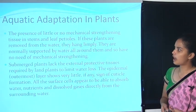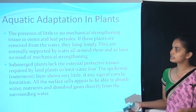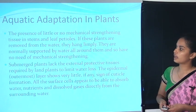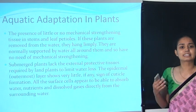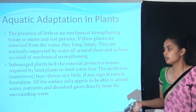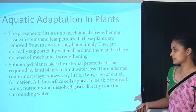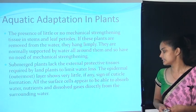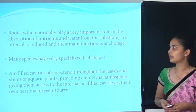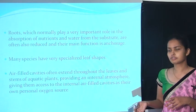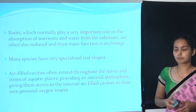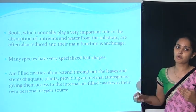Aquatic plant adaptations include: little or no mechanical strength tissue in stems and leaf materials — if removed from water, these plants hang limply as they are supported by the surrounding water. Submerged plants lack external protective tissue since they do not need to limit water loss, so they have no waxy outer covering. All cell surfaces can absorb water, nutrients, and dissolved gases directly from the surrounding water. Roots are reduced in function to only anchorage. Many species have specialized leaf shapes and air-filled cavities extending through the leaf and stem, providing an internal atmosphere — their own personal oxygen source.